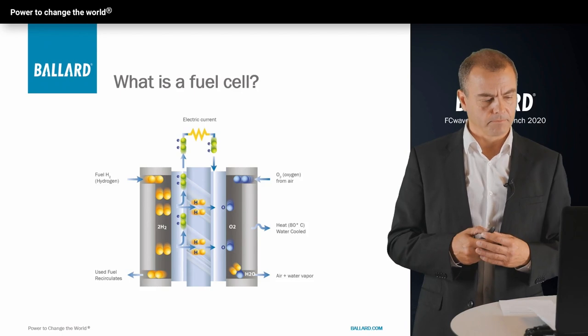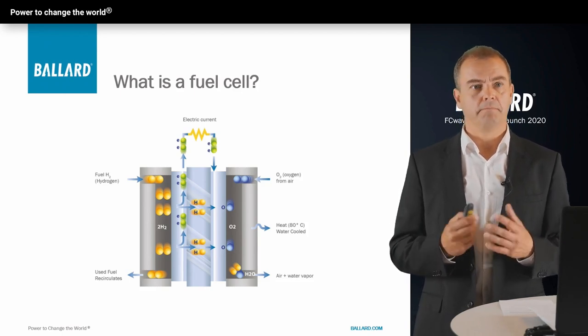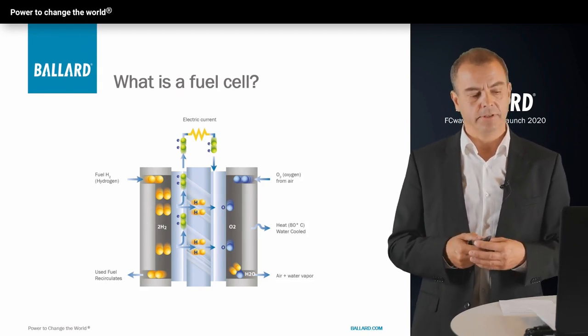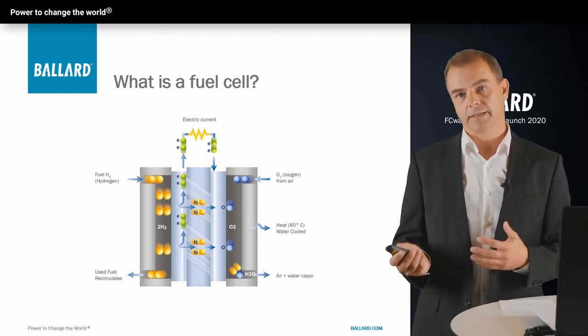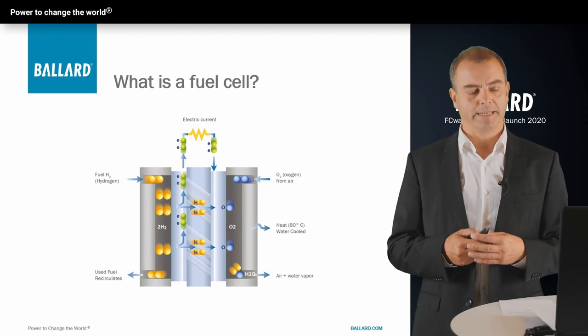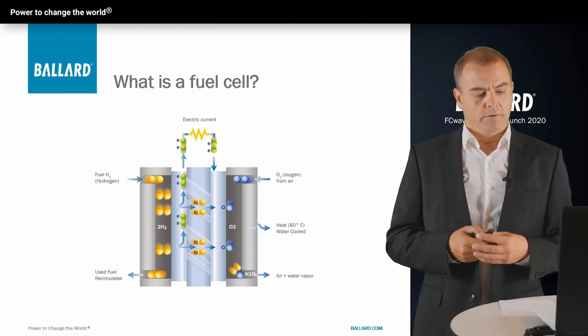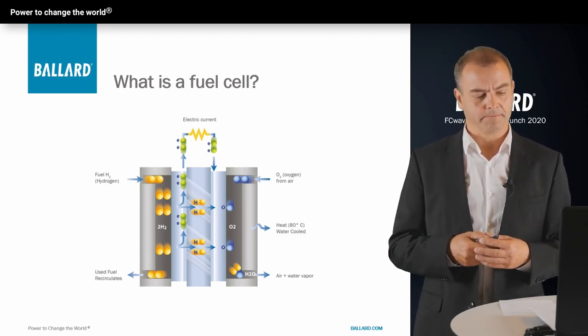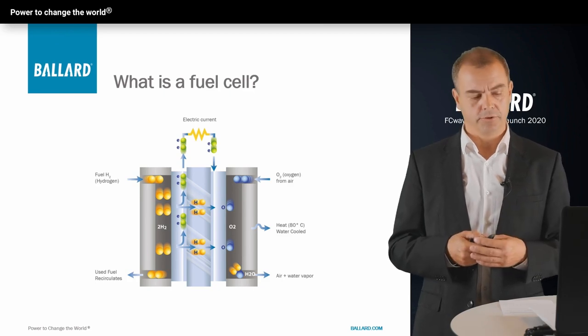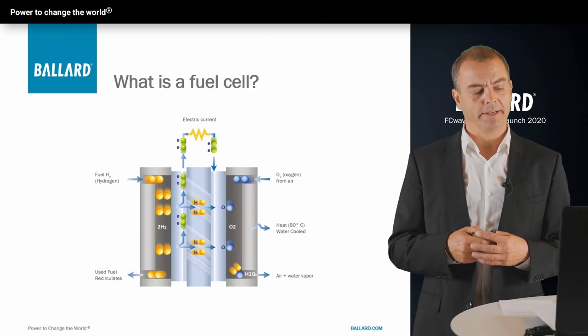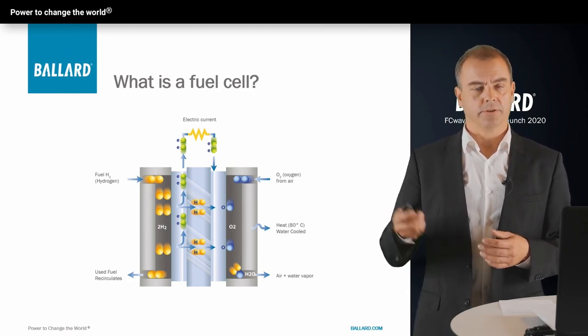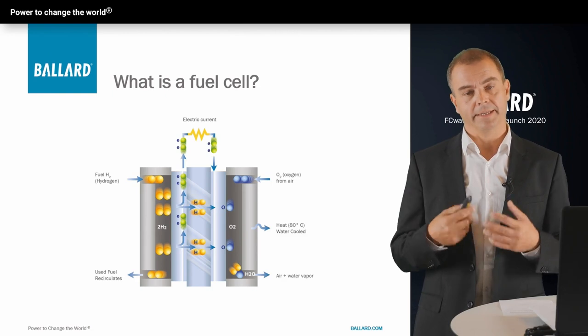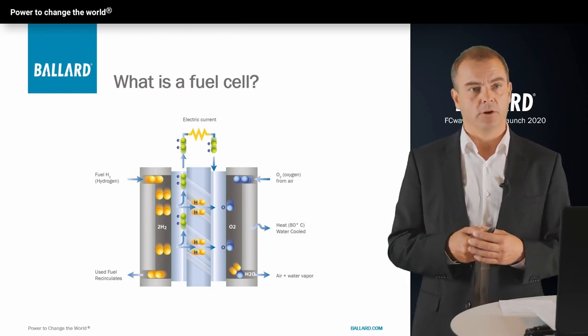So what is a fuel cell? The proton exchange membrane, PEM fuel cell, is a technology generating clean electricity from hydrogen through an electrochemical process. The fuel for the fuel cell is hydrogen, which you can see on the upper left-hand side, and the fuel cell needs oxygen for the conversion, which you can see on the upper right-hand side. Electricity is produced, as you can see in the top, and the only emissions from the fuel cell are water, water vapor, and heated cooling water. That's what you can see on the low right-hand side.